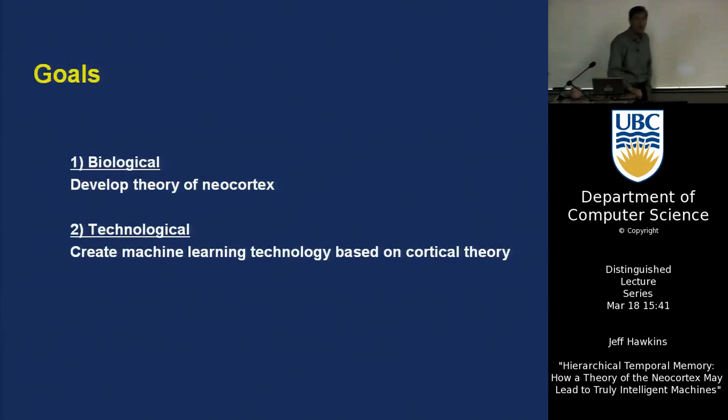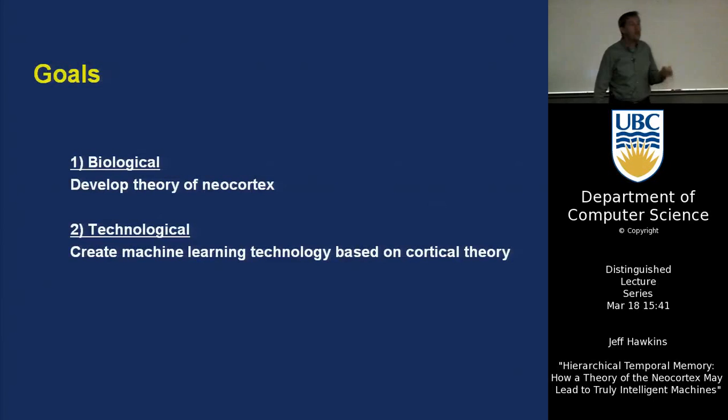Just a couple of goals — these are my personal professional goals in life. I am interested primarily in understanding how the brain works. That's my number one goal: a biological theory of the neocortex. The secondary goal — and it's secondary — is a belief that if we understand how the neocortex works, we can build machines that work on those principles, and they will be able to solve problems we haven't been able to solve other ways.